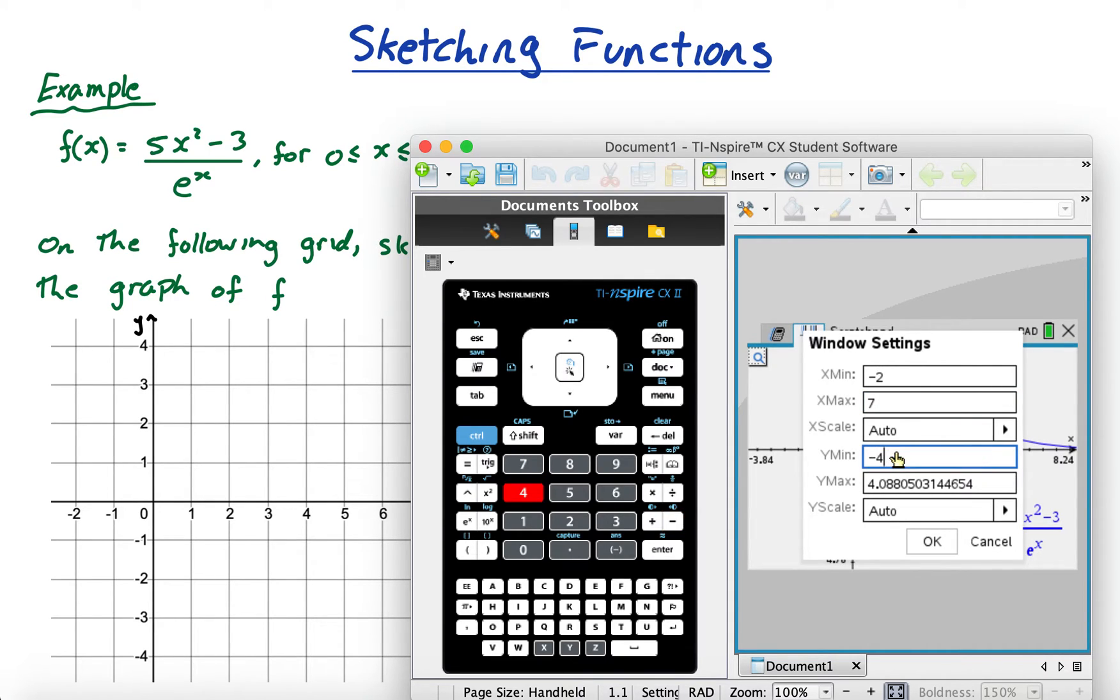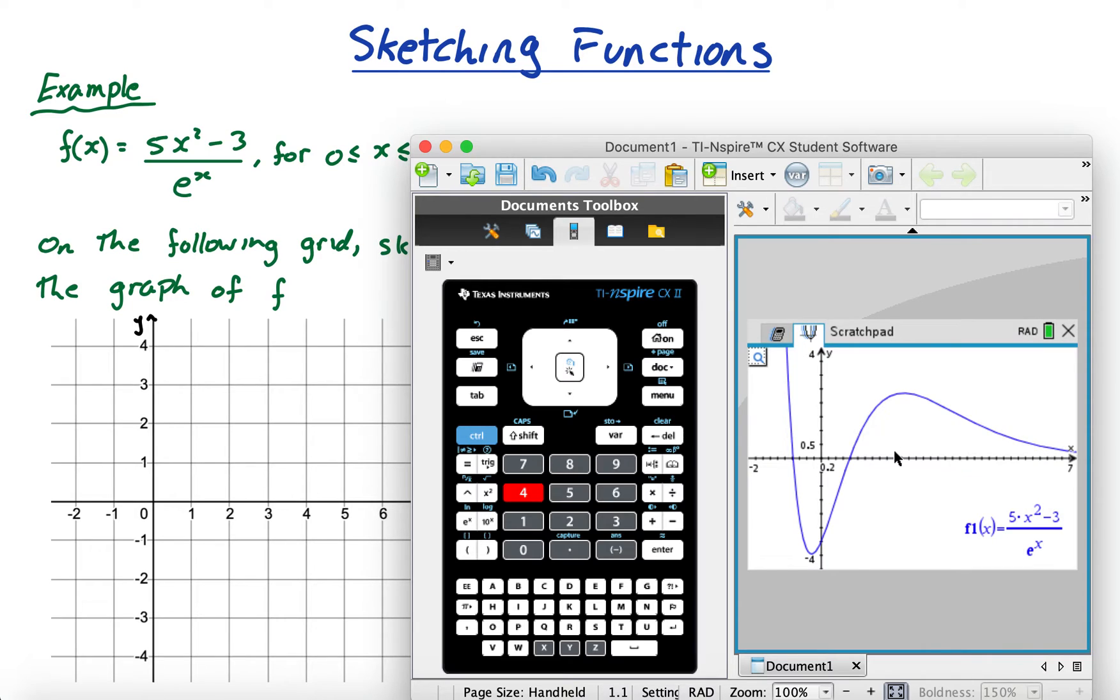Press enter and I get this. Okay, so I need to convert this into this. What are the key points? What did I say? I need the intercepts, I need the shape of the curve, and I need the endpoints and any maximums or minimums, or maxima or minima.